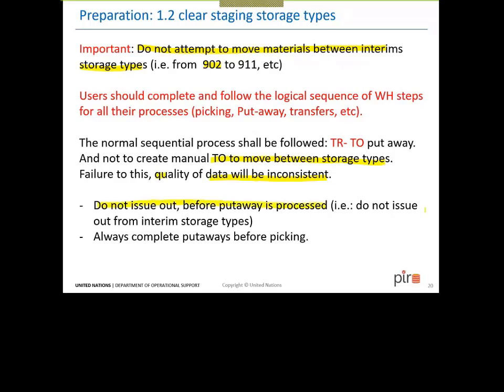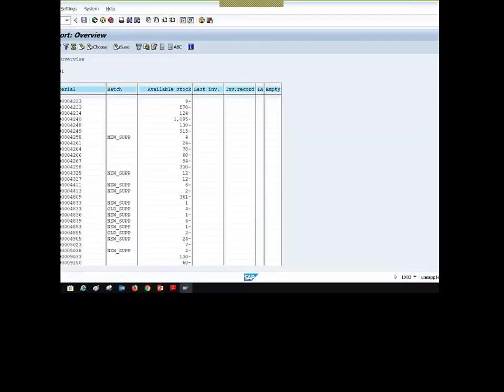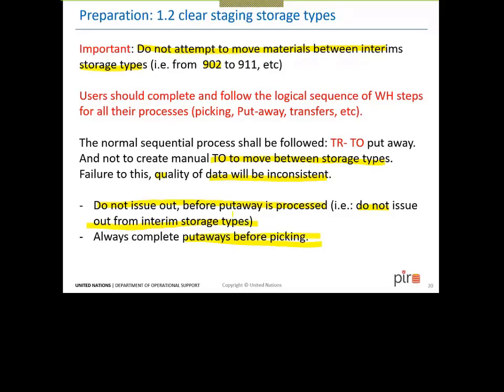Do not issue out before the put-away is processed, and if this has already been done, do not fix it in a creative way. Pay attention to pending transactions and process them. Some of the scenarios investigated with Rafael showed that problems in production are related to users performing manual TOs between interim storage types. You should not be doing that — find out what is outstanding: what TRs are open, what TOs are not confirmed, what posting changes are pending, and finalize them.